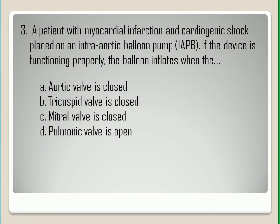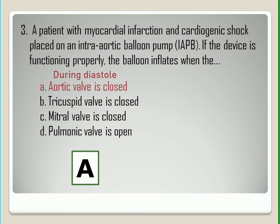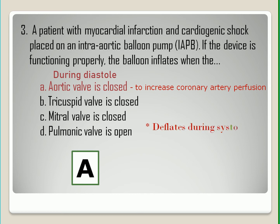Question Number Three. The correct answer is letter A. With an intra-aortic balloon pump, an inflatable balloon is inserted through the femoral artery into the descending aorta. The balloon inflates during diastole when the aortic valve is closed, to increase coronary artery perfusion. It also deflates during systole when the aortic valve opens, to reduce resistance to ejection or afterload and to reduce cardiac workload.